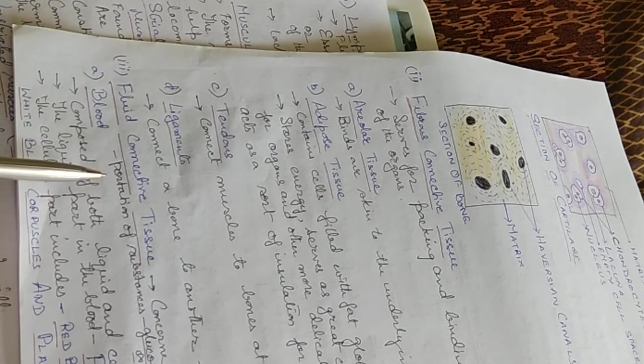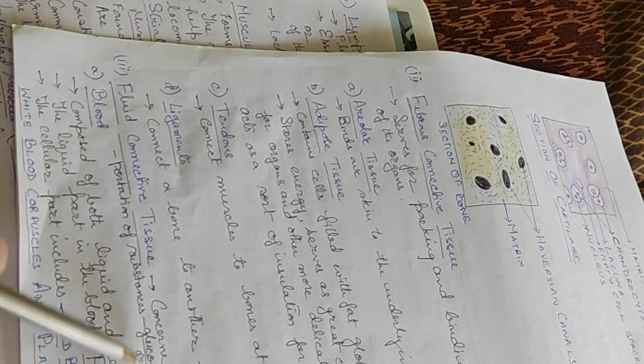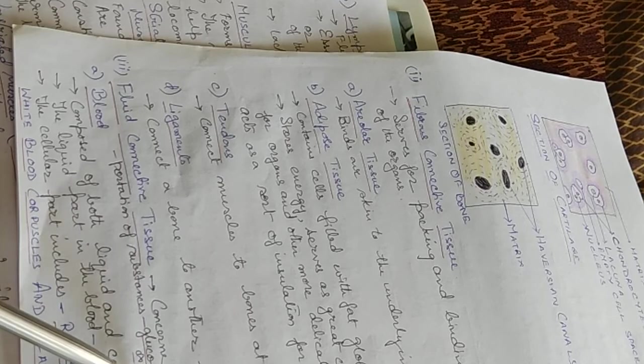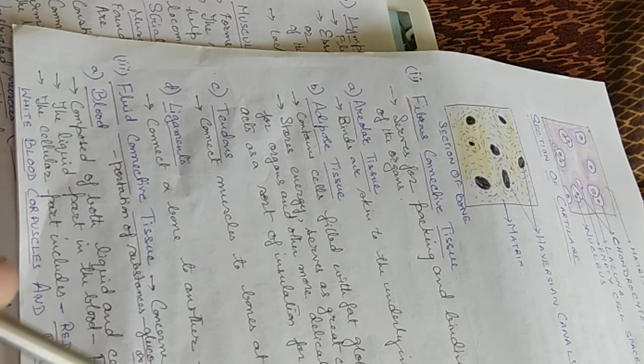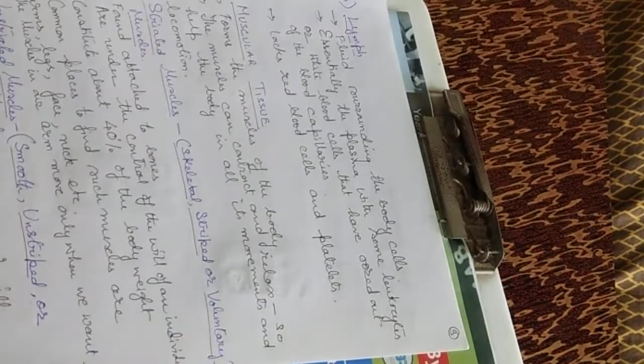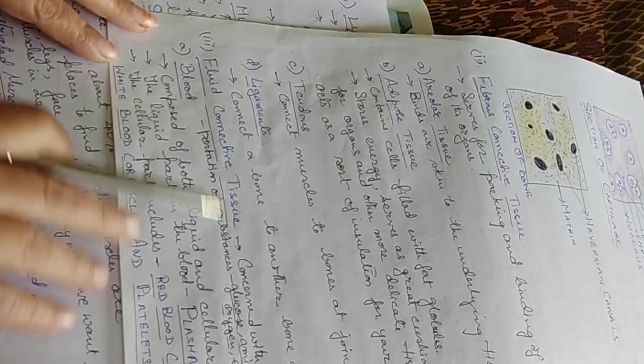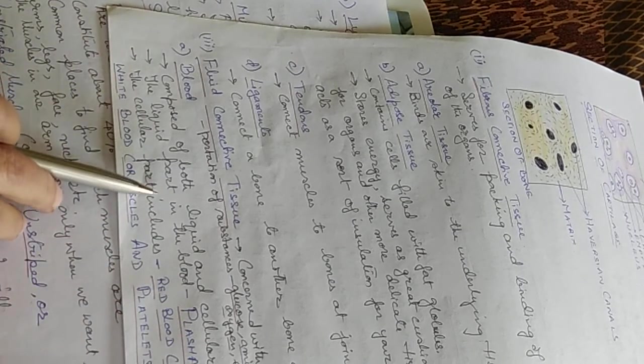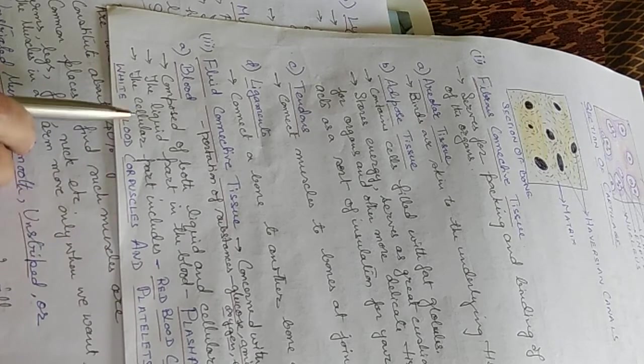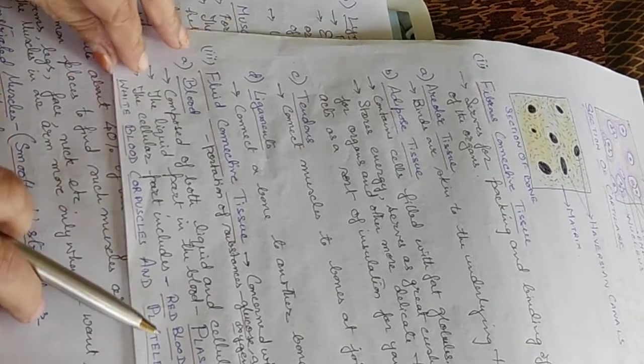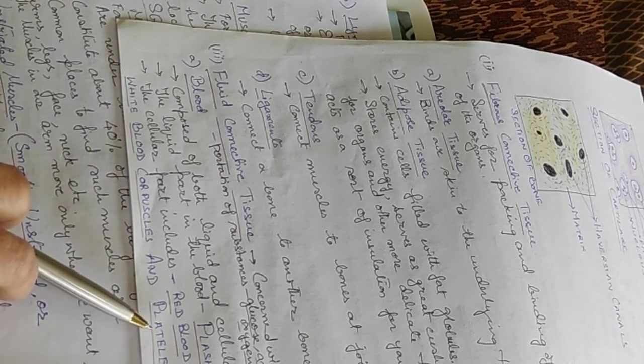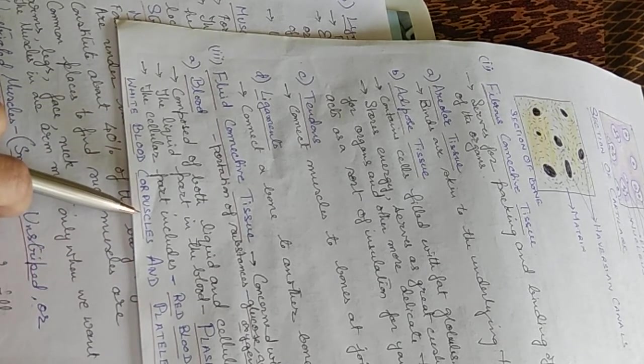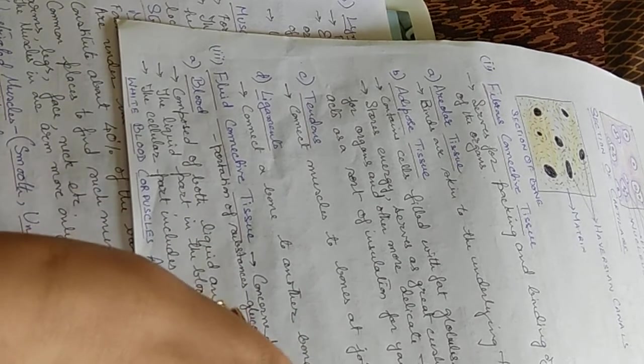Fluid connective tissue is concerned with the transportation of substances like glucose, amino acids, oxygen, etc. Fluid connective tissues are of two types: blood and lymph. Blood is composed of both liquid and cellular parts. The liquid part in the blood is the plasma and the cellular part includes red blood cells, white blood cells, and platelets. The red blood cells are also called red blood corpuscles.